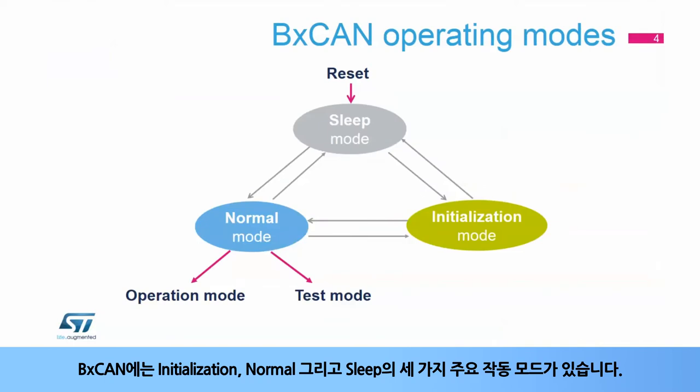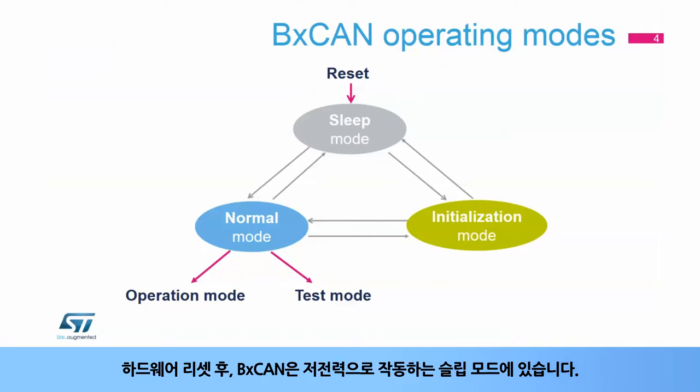The BX CAN has three main operating modes: initialization, normal, and sleep. After a hardware reset, the BX CAN is in sleep mode, which operates at a lower power.